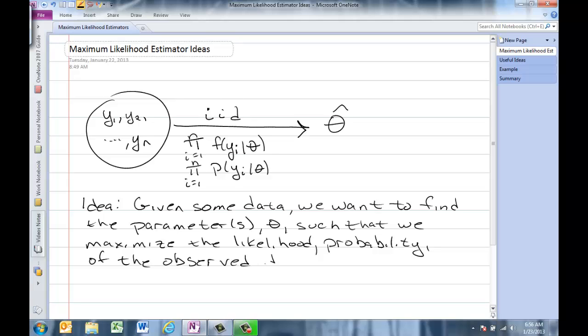What I mean by that is, again, given that we observe this data and we have the likelihood function, we have to find the value of the parameter that maximizes the likelihood or maximizes the probability of getting that observed data.